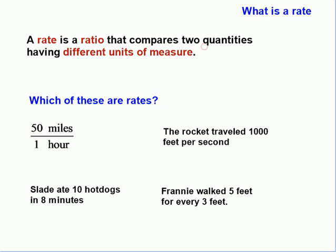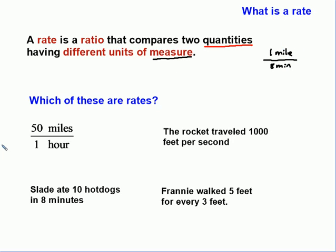A rate is a type of ratio that compares two quantities. A quantity is an amount or some number of something having different units of measure — and that's really important, the units of measure. For example, if I said I ran one mile every eight minutes, that is a ratio of miles to minutes. I have two different kinds of measurement: miles and minutes. The one and the eight are the quantities.